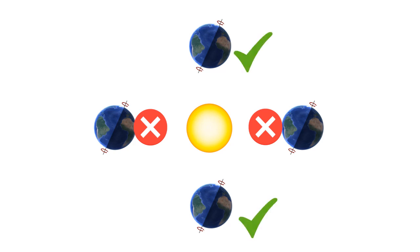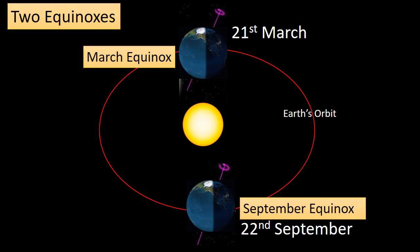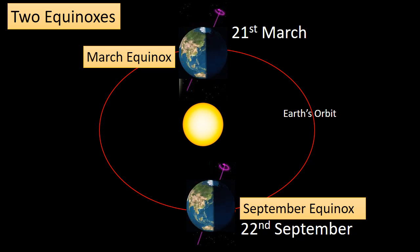At this time, Earth's axis is perpendicular to the sun. On the date of the equinox, no matter where you are or at any location, the length of day and night are roughly equal on Earth.